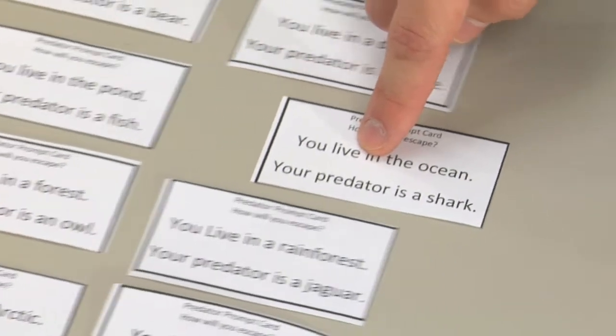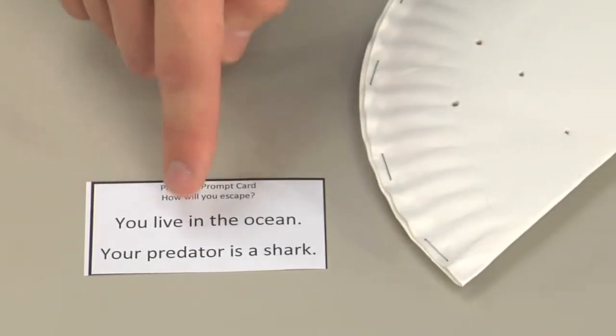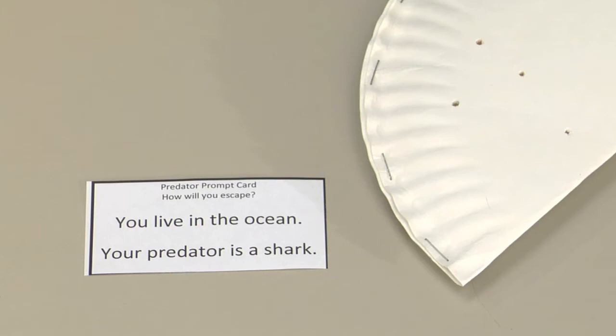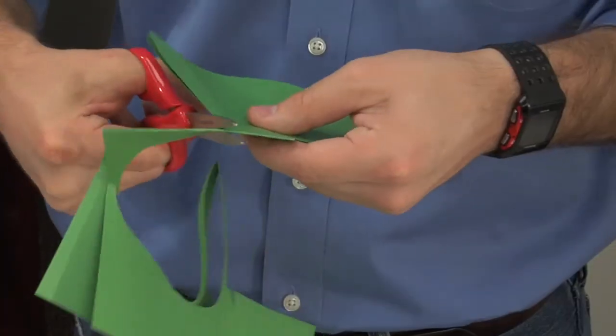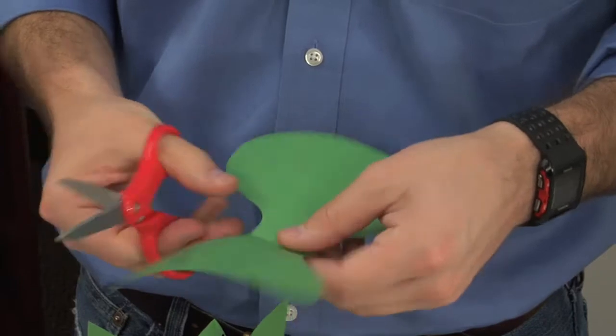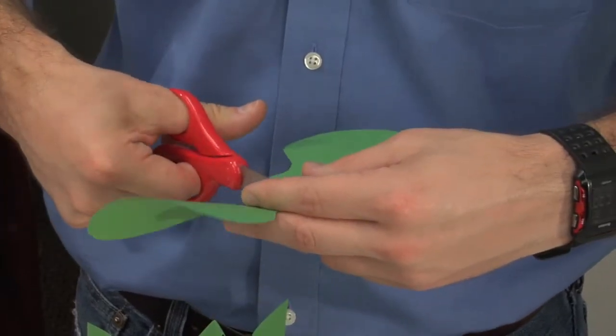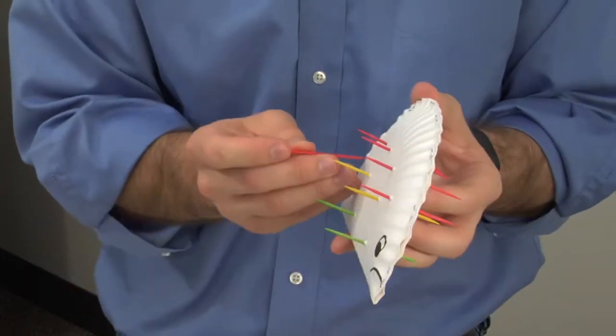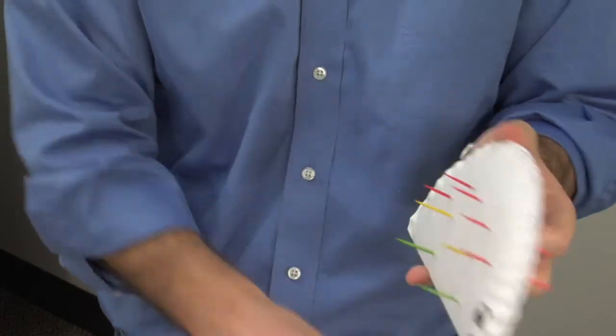Assign each student a Predator Prompt Card that defines a particular animal's predator and the environment in which it lives. Instruct your class to assume the identity of the prey defined on the card and create an animal with a defense mechanism to use.